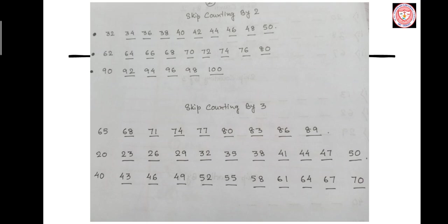62, 64, 66, 68, 70, 72, 74, 76, 80, 90, 92, 94, 96, 98, 100. You add 2 to get the next number.